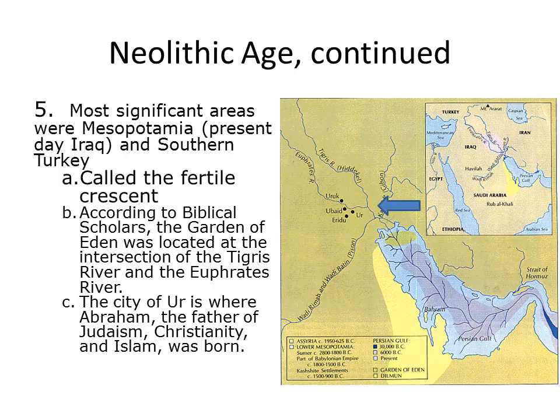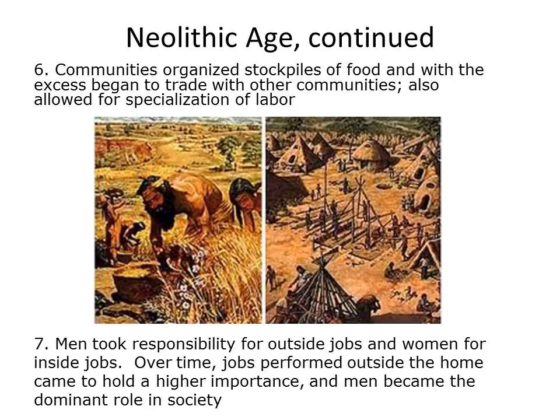Another important place on this map is Ur, right here. Ur is where Abraham, the father of Judaism, Christianity, and Islam was born. Abraham, as far as historical figures go, is the most important person to come out of this time period. Communities started to organize and stockpile food, and if they had stuff left over, they were able to trade with other communities.